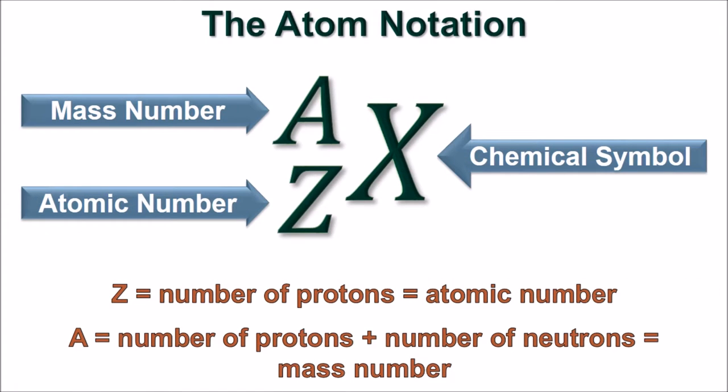Atoms of the same type combine to form elements. A chemical symbol is a sign for each element and is usually a one- or two-letter abbreviation.